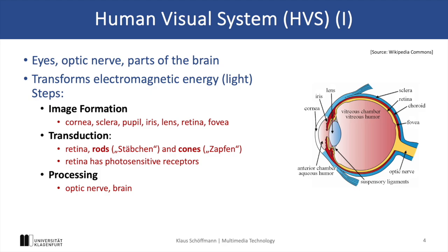And the final step is processing. Once the retina has converted light into electrical signals, these signals travel through the optic nerve to the brain, where they are interpreted as the images that we see.